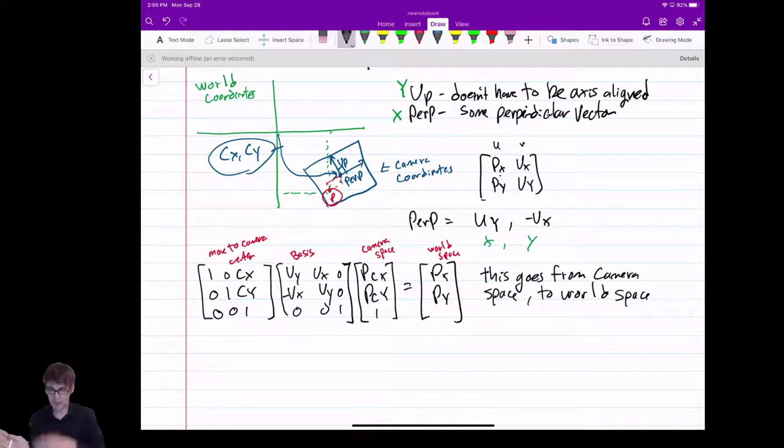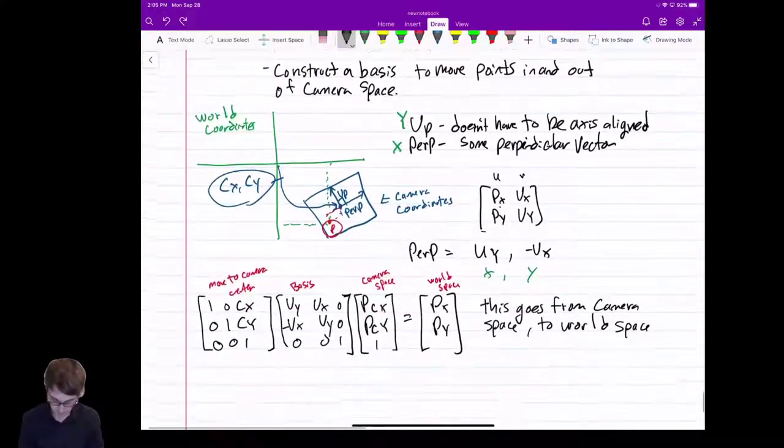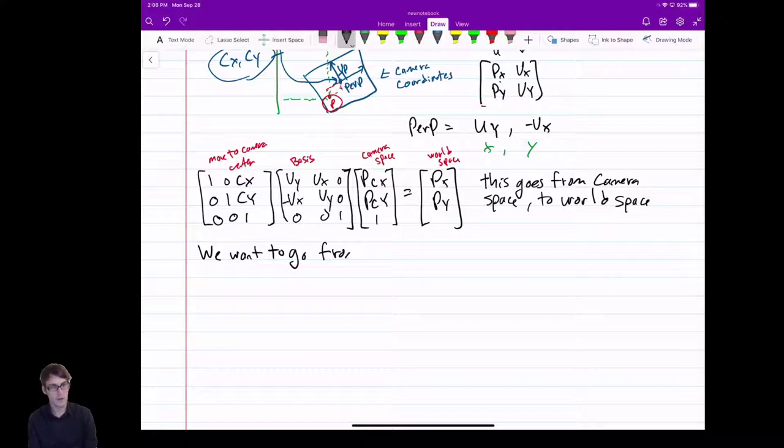I multiply by the basis, so I, you know, off those vectors, I translate it. Now, that's the wrong way, right? I want to go, I don't want to go from camera to world space. I want to go from world to camera space. So we need to invert this function, but I did it this way because it's a lot easier to understand what we're doing. So we want to go from world coordinates to camera coordinates.